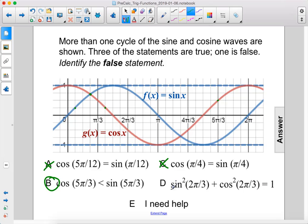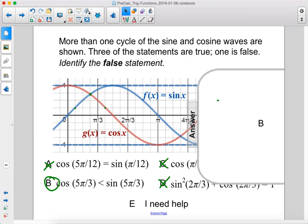Here, we have an identity. Sine squared of 2π over 3 plus cosine squared of 2π over 3 equals 1. This is true for all values of x, so that is true. The answer here is B.